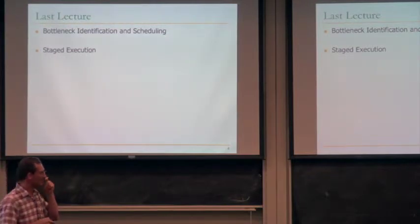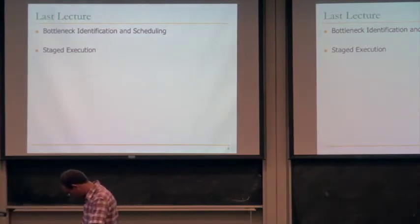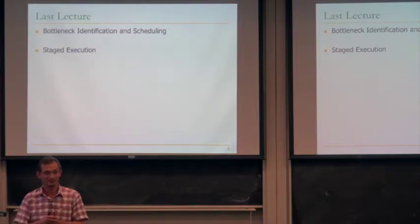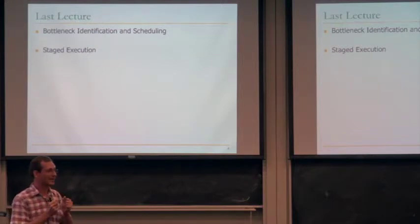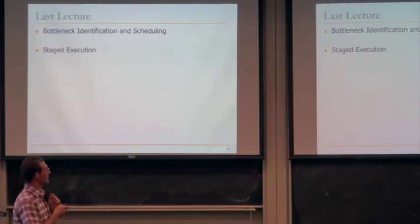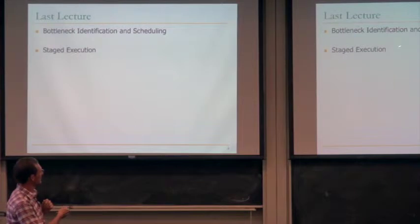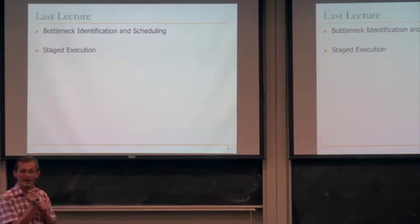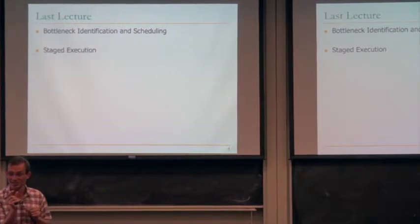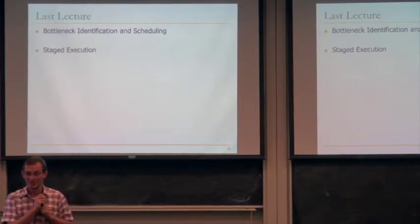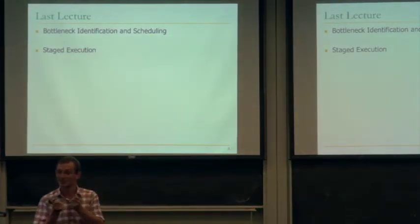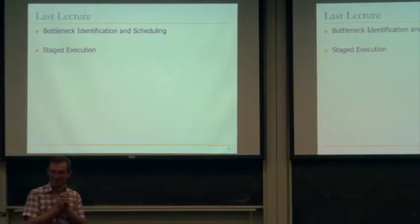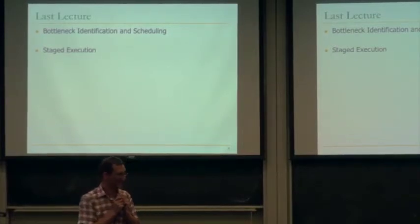Last lecture, we covered bottleneck identification and scheduling, and we talked about staged execution. Those are very important research areas, especially making multi-core architectures much better at executing fine-grained tasks. One of the issues in those fine-grained tasks is what are the bottlenecks? We covered several synchronization bottlenecks, and when you divide a big problem into very fine-grained tasks — tens or hundreds of instructions — communication becomes a problem, and staged execution targets that problem.